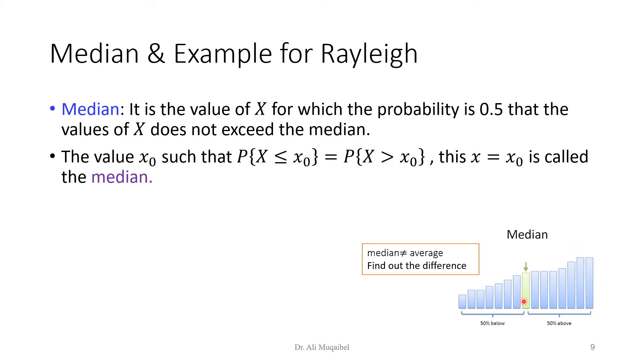It's the value where half of the populations are above and half of the populations are below. If you are a student in the class and you are the median, then you know that half of the class is getting above you and half of the class is getting below you. But remember that the median does not equal the average. The median is related to the number of students. I would like you to find out more the difference between the median and the average if you are not sure. For now, the question says: find the median of the Rayleigh distribution.